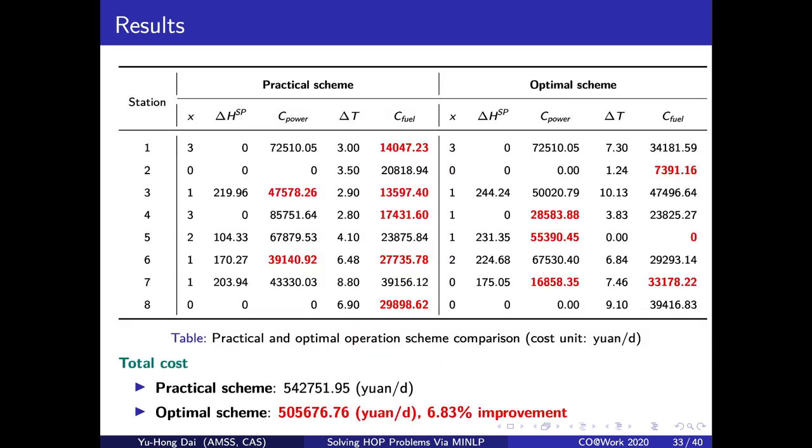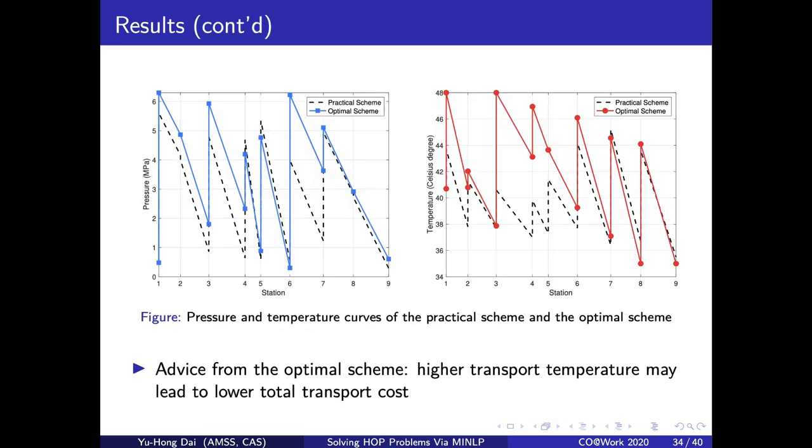We compare the optimal scheme obtained from HOPBB method with the practical scheme which is currently adopted by the oil company. The comparison shows the optimal scheme achieves nearly 7% improvement on the running cost. This is the pressure and temperature curves of two schemes. The optimal scheme has a higher transport temperature than the practical scheme. So we can conclude that higher transport temperature may lead to lower total transport costs in the QT pipeline.